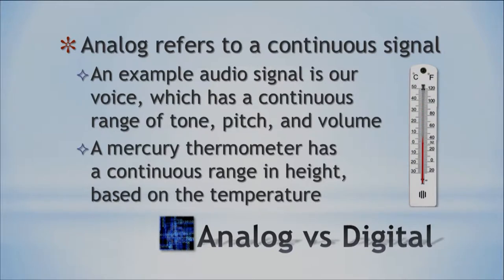Think about another example: a mercury thermometer. You might have seen one at your grandparents' house. It's got a continuous range — depending on the temperature, the mercury goes up and down. Or say you're at karaoke — your voice is continuous. It might be a certain volume, but it's a continuous signal, too loud or too soft. So analog really just means continuous signal.